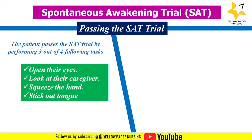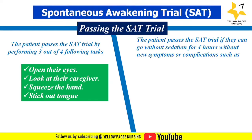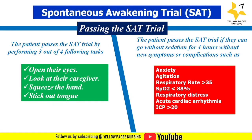The second way the patient passes the SAT trial is if they can go without sedation for four hours without new symptoms or complications such as anxiety, agitation, respiratory rate more than 35, SpO2 less than 88%, or two or more signs of respiratory distress like tachycardia, bradycardia, use of accessory muscles, marked dyspnea, abdominal paradox, diaphoresis, acute cardiac arrhythmias, or ICP more than 20.